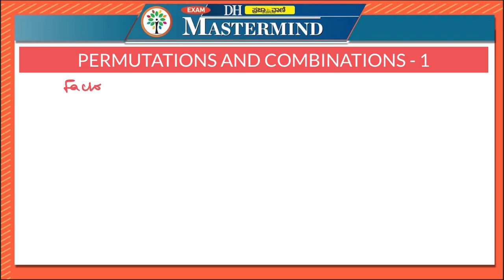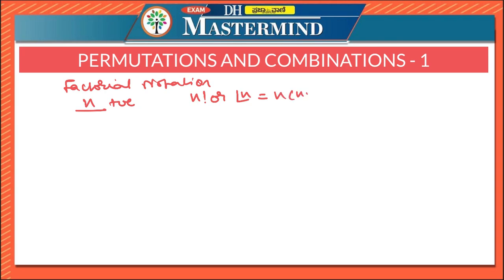First of all, let us see the factorial notation. What is factorial notation? In order to understand factorial notation, let us consider n to be a positive integer. If n is a positive integer, then n factorial is usually denoted by the symbol n!. Factorial of a whole number n is defined as the product of that number with every whole number less than or equal to n, down to 1.